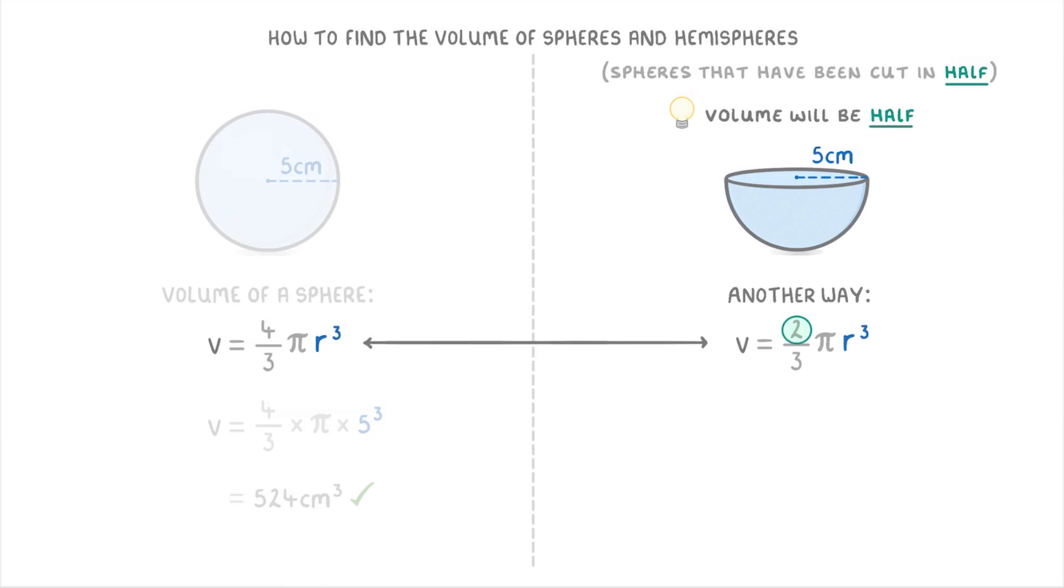So basically, because we've halved the 4 to a 2, the overall volume will be half as big as well. So it gives us the volume of a hemisphere rather than a whole sphere.